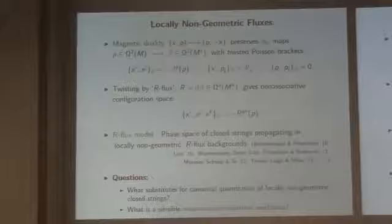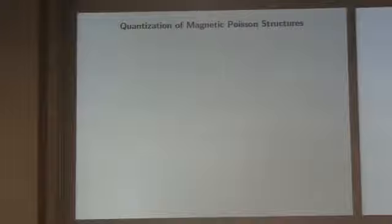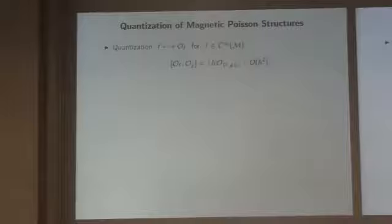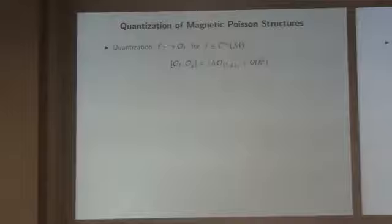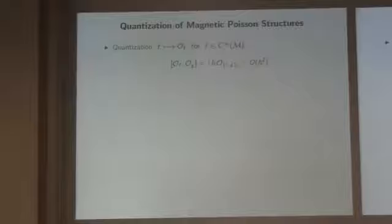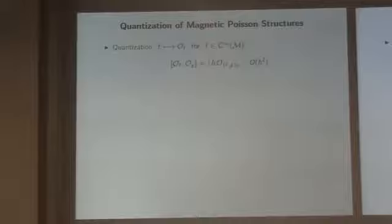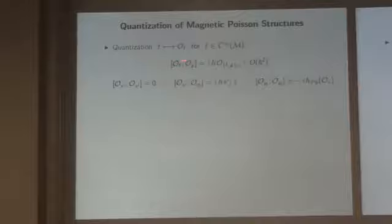So let me very vaguely talk about the quantization of these twisted Poisson structures. What is quantization? It should take a phase space function and associate some sort of operator to it. When I calculate the commutator of these symbols, at first order in h-bar I should reproduce the twisted Poisson structure, with corrections at higher order. At the level of coordinate functions the brackets should map exactly, but for more general functions there will be corrections.